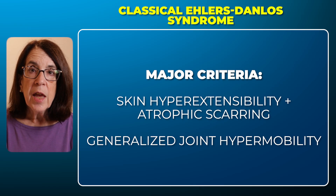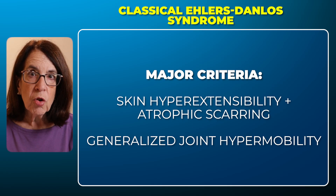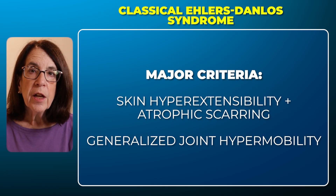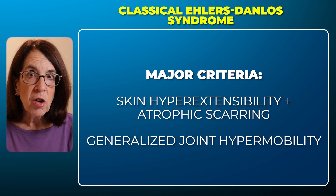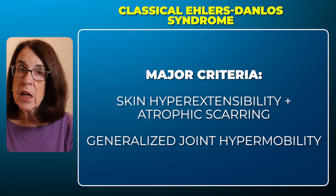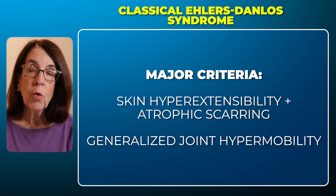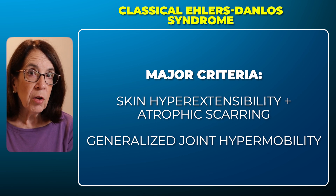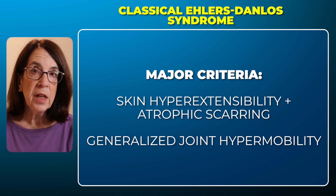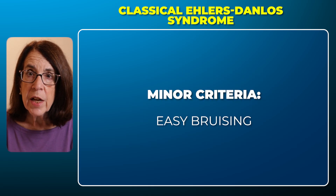We can also make a clinical diagnosis of the classical type of Ehlers-Danlos Syndrome if a person has one major criteria and three of the minor criteria. They may have skin hyperextensibility and atrophic scarring as the major criteria, or they may have generalized joint hypermobility as the major criteria, and then the minor criteria are the following.